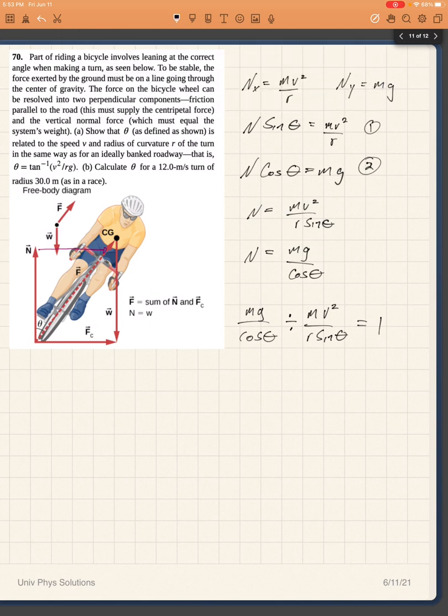So I continue with my division. Then that's going to be equal to mg over cosine of theta times r sine of theta over mv squared. So we can cancel the m and we have gr sine of theta over v squared cosine of theta.